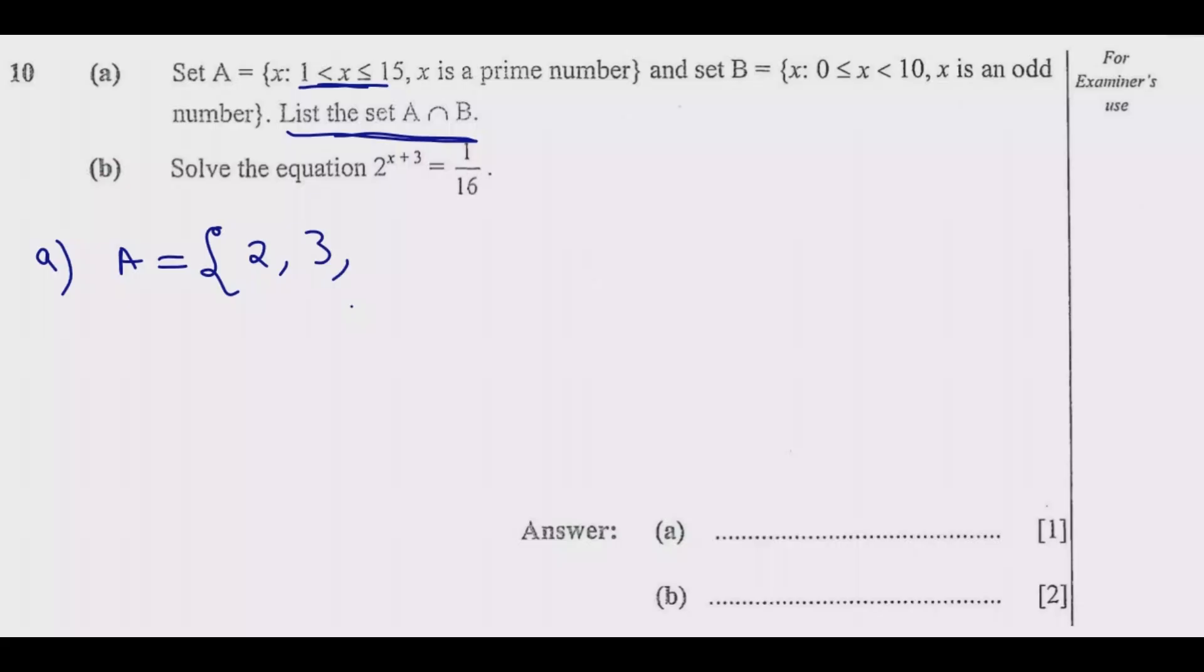Then we go to 5, then 7. Then 9 is not a prime number because it can be divided by 3, 1, and itself. So 11 is a prime number, then 13. The next prime number from 13 is 17, but 17 is greater than 15, so this is what is in set A.